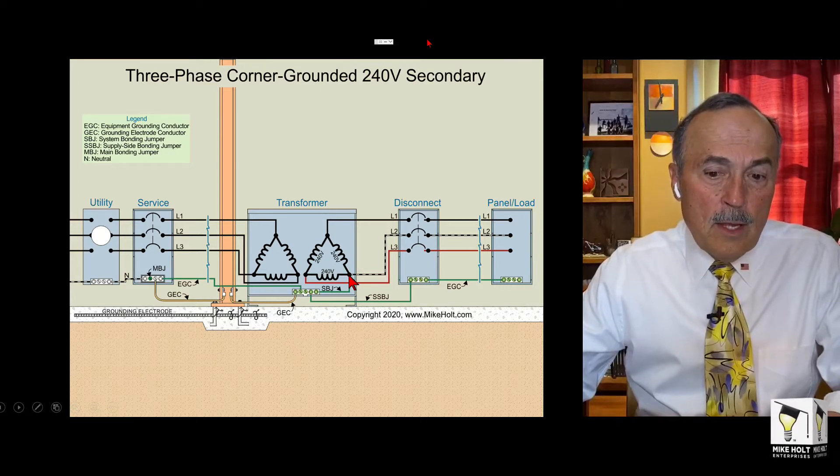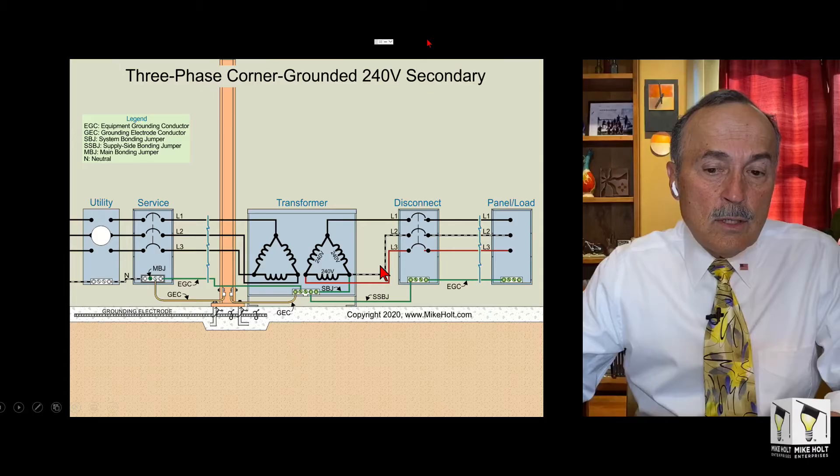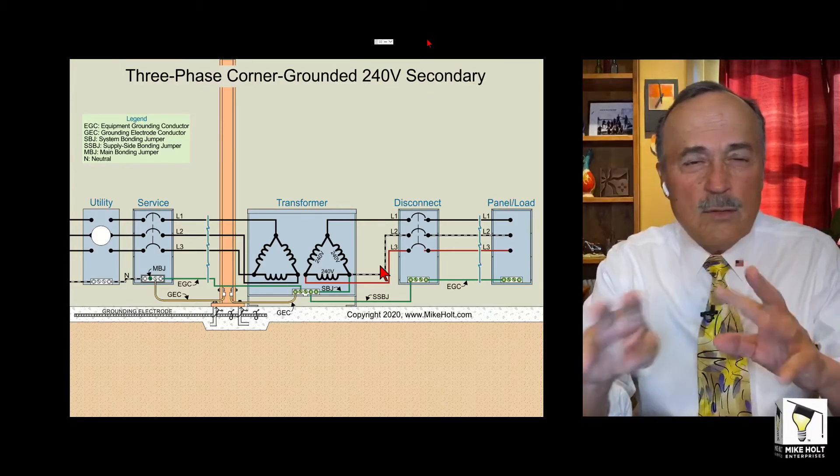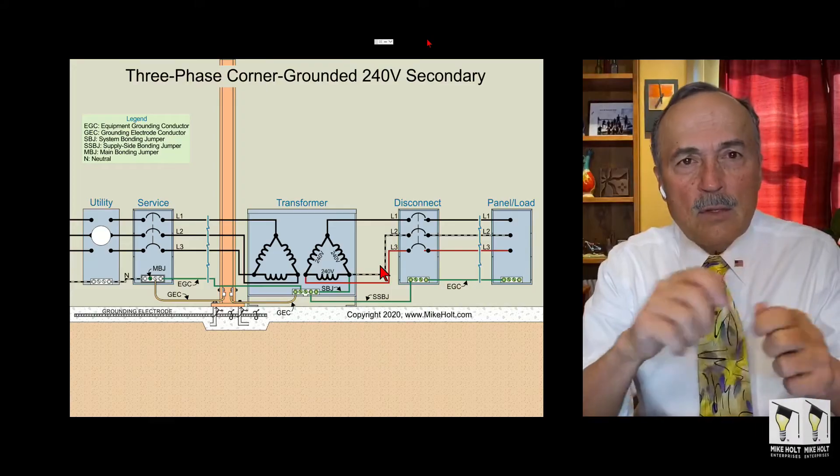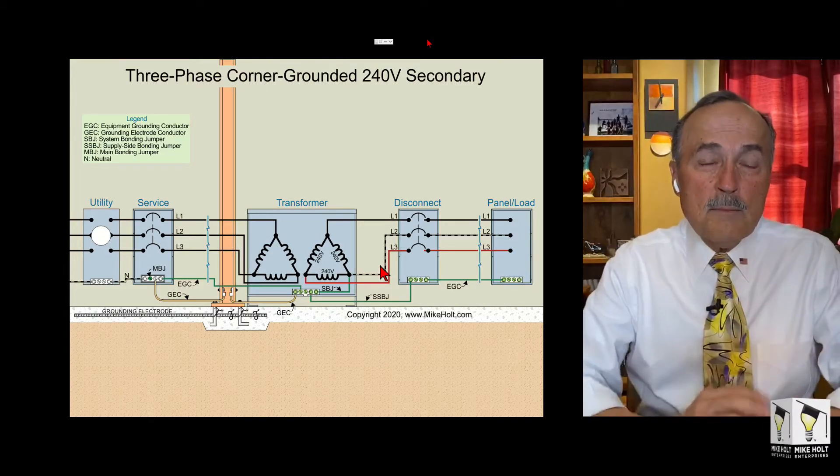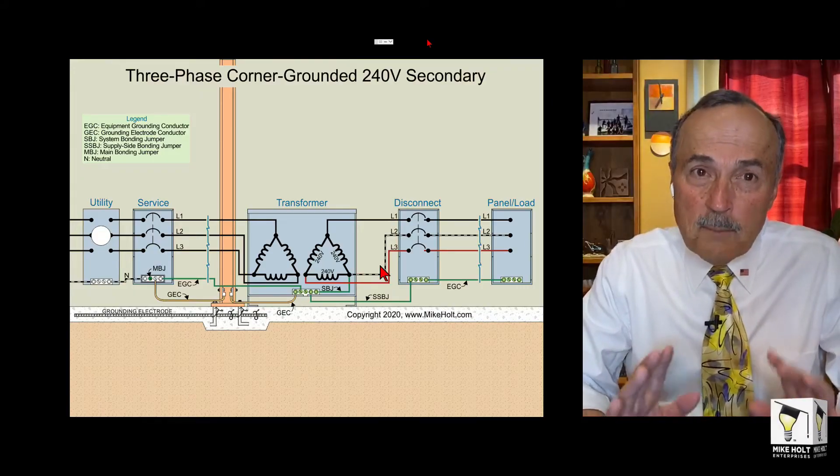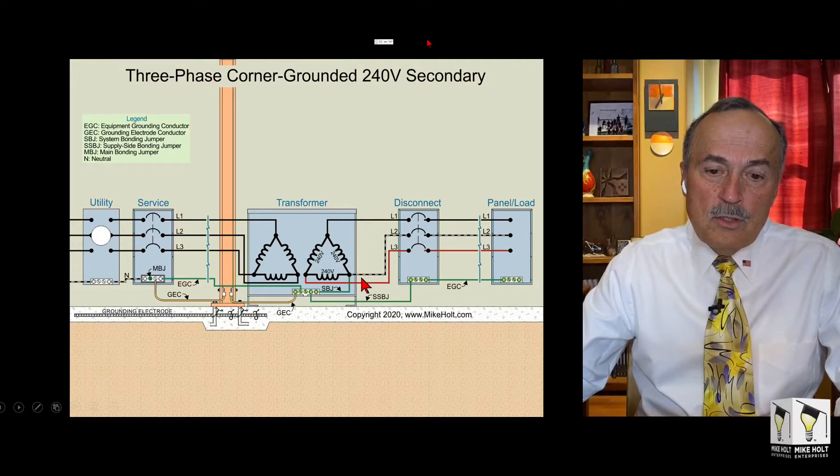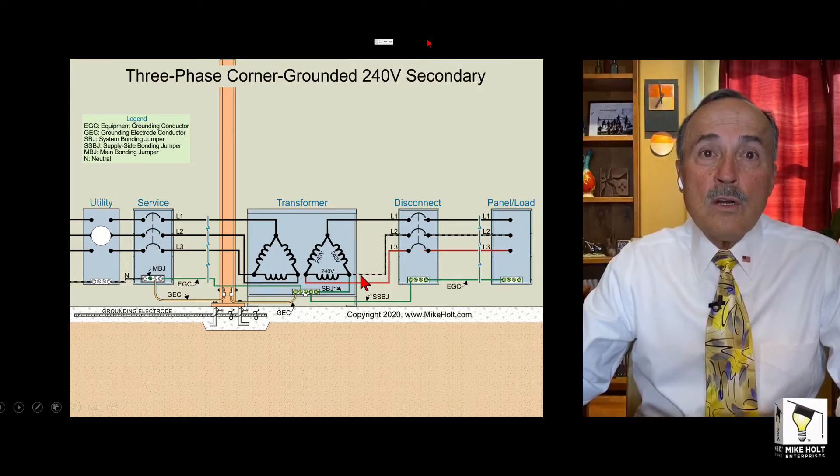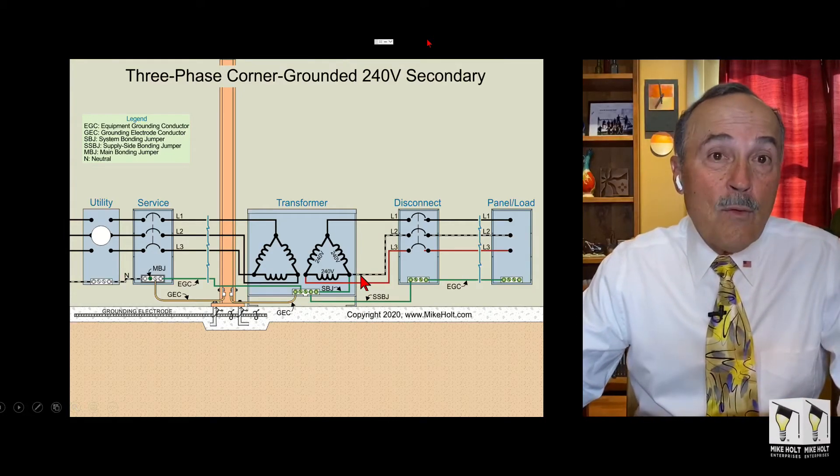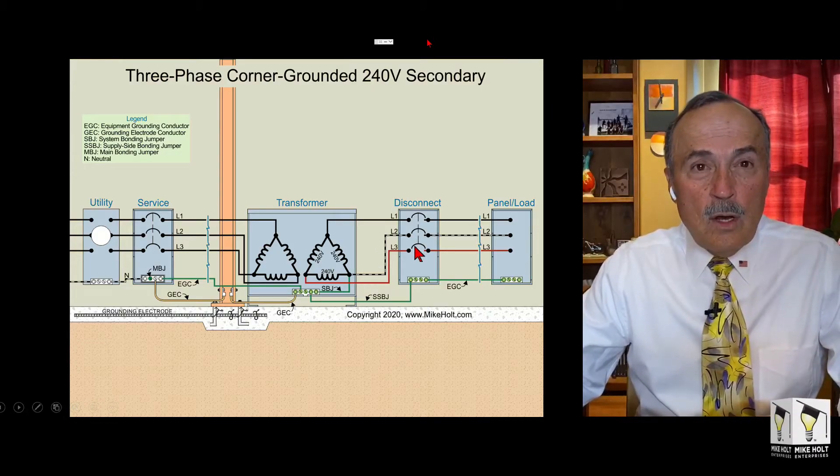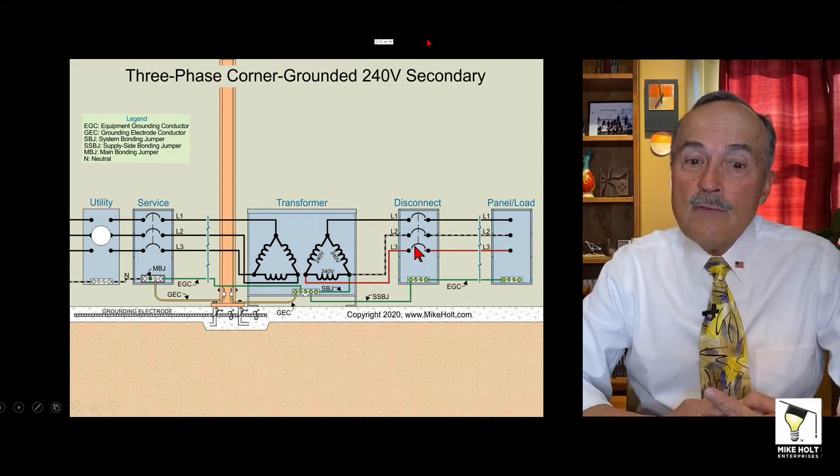Once you corner ground it, that point right there is the grounded conductor. The grounded conductor per 206 tells us to be white or natural gray. You can tape it depending on the wire size if it's four gauge and larger. Basically, let's just say white and gray for simplicity purposes. If it was a 240 volt corner grounded system I'd probably use white, and if it was a 480 volt corner grounded, probably use gray.